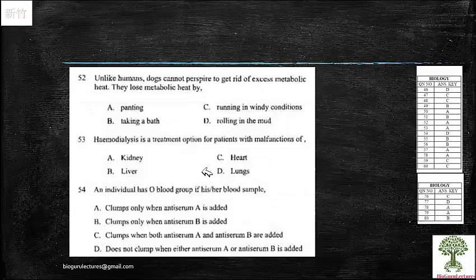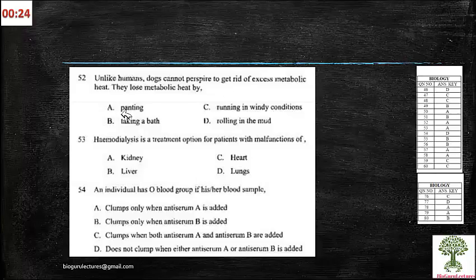Next is question 52. Unlike humans, dogs cannot perspire to get rid of excess metabolic heat. They lose metabolic heat by something called panting. You can always see dogs when they like you very much, even they do that.